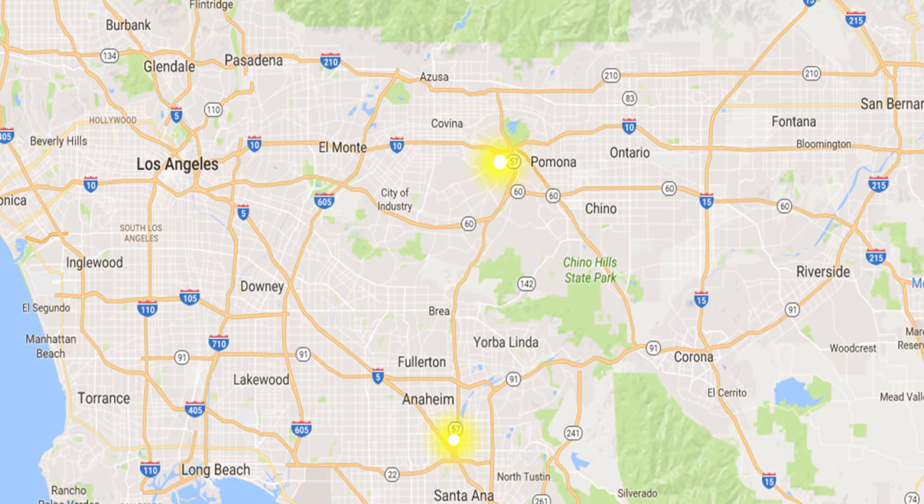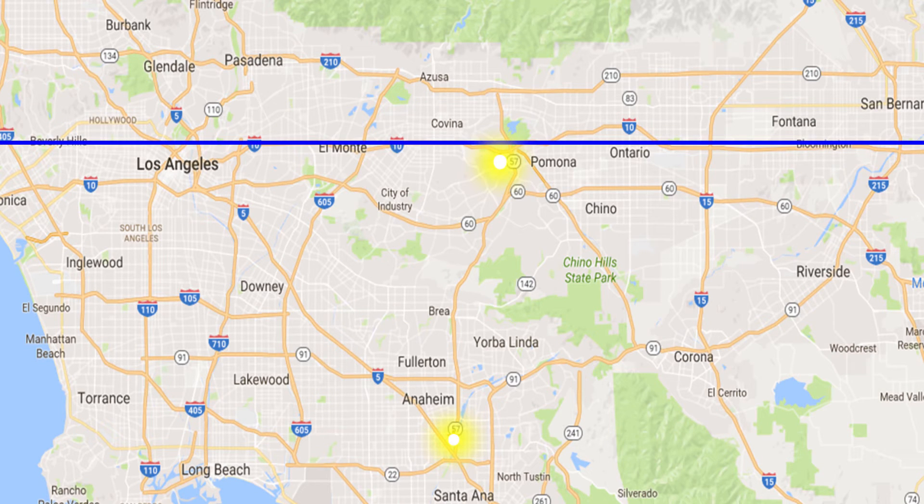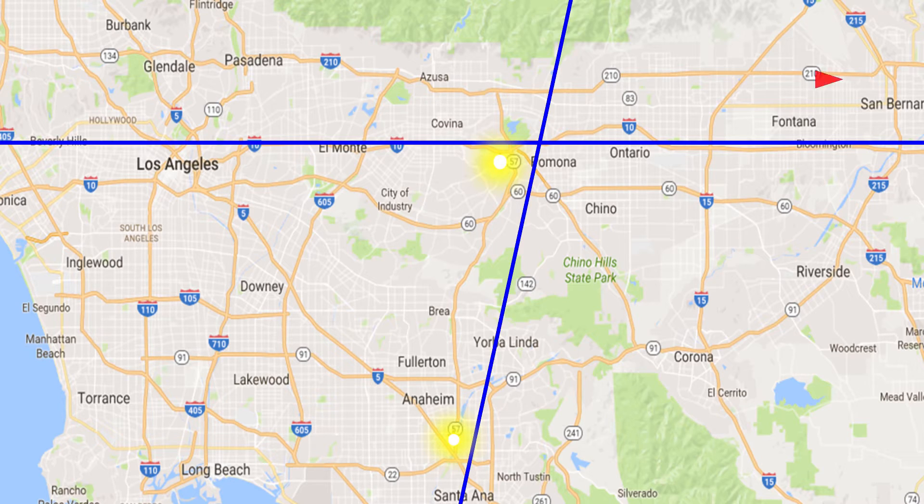You could say, take Highway 10 and 57. But this information is not enough because Highway 10 runs from east to west and we have to specify which way to go, east or west. Similarly, 57 runs north-south and we have to specify which way to go, up north or south. So, the better way to give the direction will be, take 10 east and then take 57 south.